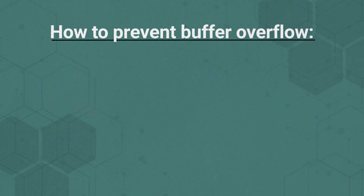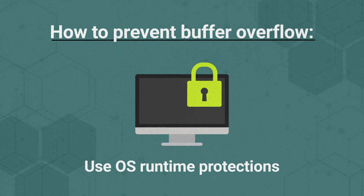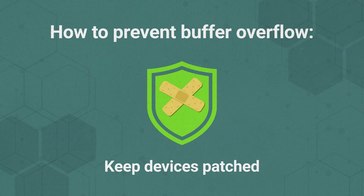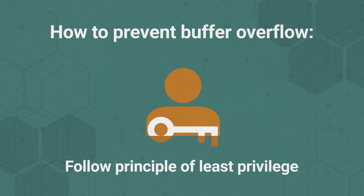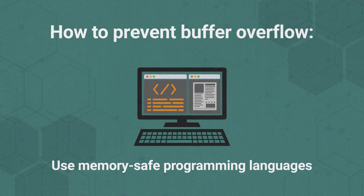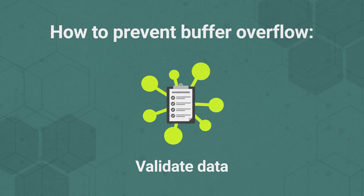While these attacks can be devastating, they can be prevented. Businesses should consider the following precautions: use OS runtime protections, which make it harder for attacks to succeed; keep devices patched to fix buffer overflow vulnerabilities; follow the principle of least privilege, only giving users and apps the permissions they need; use memory-safe programming languages like Java, Python, or C#; and validate data, ensuring it is within the bounds of what is expected and not overly long.